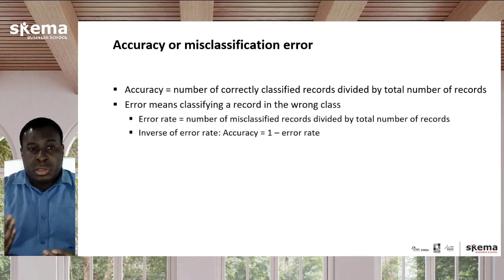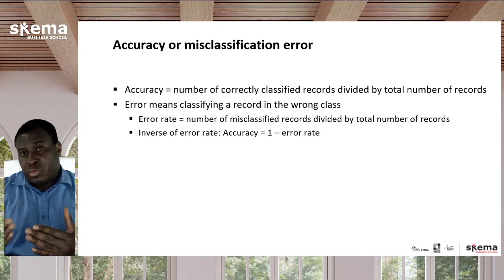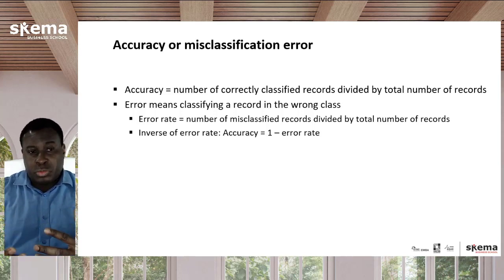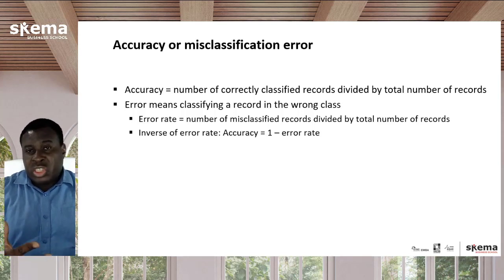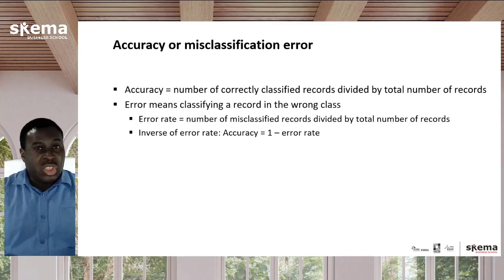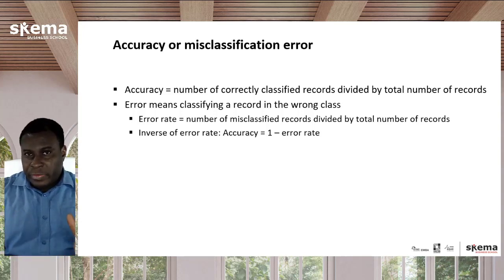Error is the inverse. An error means that something was classified wrong — something was actually true but the computer said it was false, or it was actually false and the computer said it was true. The error rate is the number of misclassified records divided by the total number of records. Accuracy is just one minus the error rate and the error rate is just one minus accuracy — they're simple inverses of each other. The idea of accuracy is fairly straightforward.